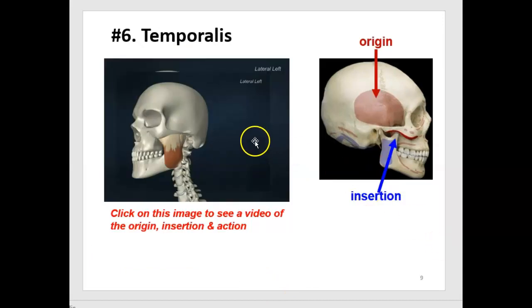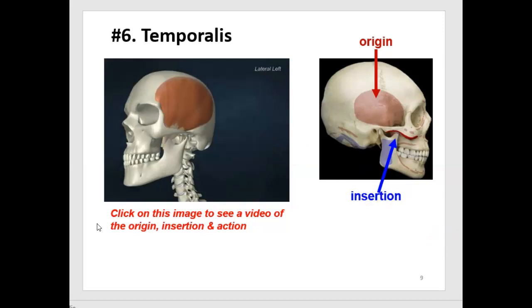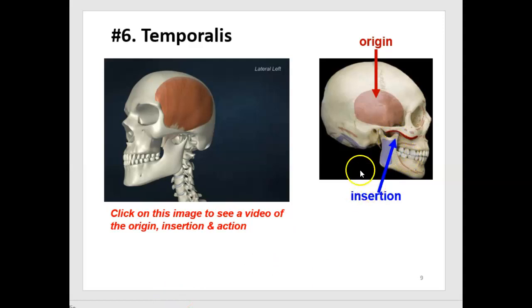The temporalis has an origin in the temporal fossa, shown in red on the skull here. The insertion is on the coronoid process of the mandible.